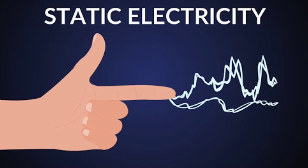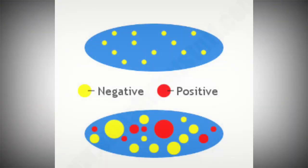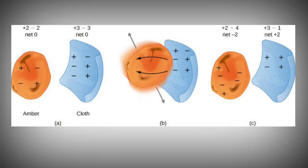What is static electricity? All materials are positive and negative. In this case, the unbalanced negative and positive charges in a material — that is static electricity.